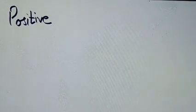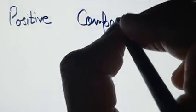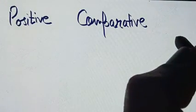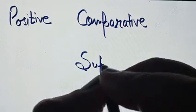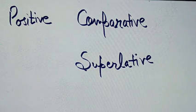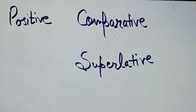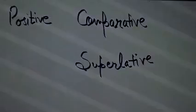Every adjective has three degrees: the first one is positive, the second is comparative, and the last is superlative. Most students get confused between the three forms of verbs and adjectives. Here we will pick adjectives only, and adjectives will be further divided into degrees — there will be no forms of adjectives.